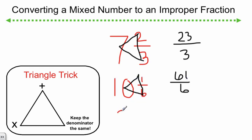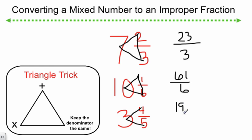Let's do one more. If I have 3 wholes and 4 fifths of another whole, how can I quickly turn this into an improper fraction? Again, I'm going to start in my denominator: 5 times 3, or how many are in a whole times how many wholes we have. 5 times 3 is 15. Add in the 4 up top: 15 plus 4 is 19. And we come back down to our denominator — it always stays the same. So by using the triangle trick, I've quickly changed these mixed numbers into improper fractions.